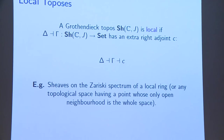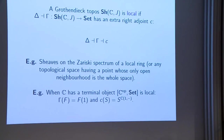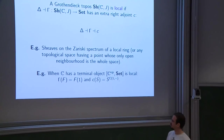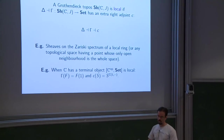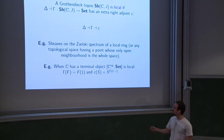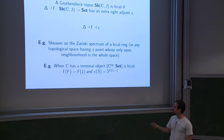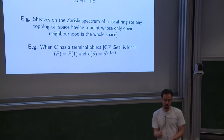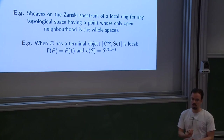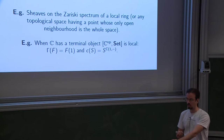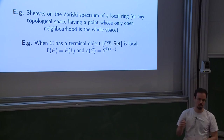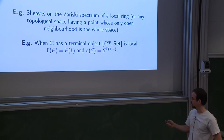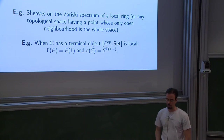Another very simple example — if you get bored of the talk you can work this out yourself — is to take C a category with a terminal object, and then the direct image functor there is just evaluation at the terminal object. You're pre-composing with the functor that picks out that terminal object, and then you get your left and right Kan extensions, which are going to be the left and right adjoints.